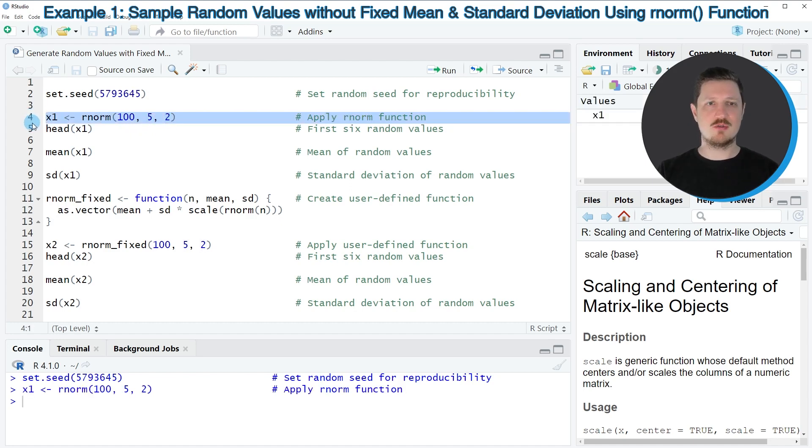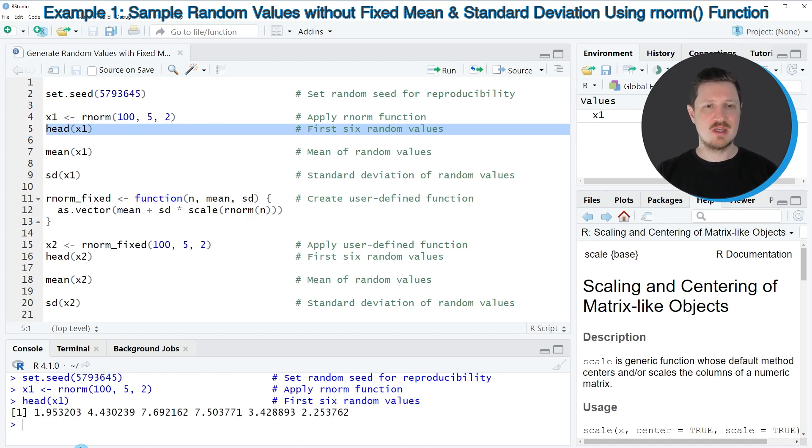So after running line 4 of the code, a new vector object called x1 is created and we can print the first six values of this vector object by running line 5 of the code. And then you can see at the bottom in the RStudio console that we have created a vector containing randomly distributed values.